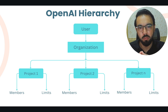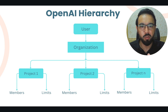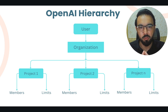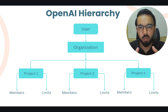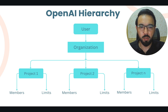Under the organization you can have different projects. Initially when you have a default organization, you will also have a default project and all API requests you send to OpenAI go under the default project and default organization. If you want another project for another team or group, you can create multiple projects and each project will have its own set of members and its own limits for requests and tokens.